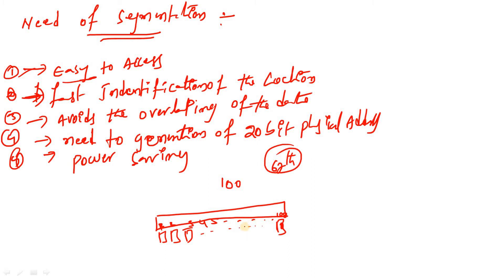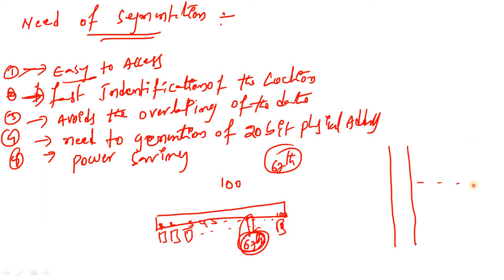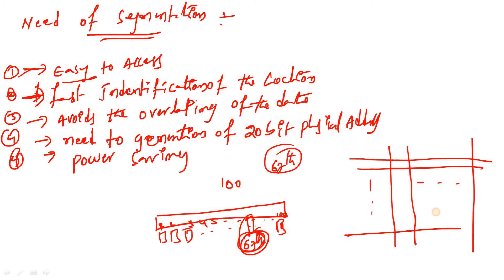Suppose if you want to access the 67th house, you need to count from the first house - first, second, third, fourth, fifth, and so on up to the 67th house. The cursor identifies the 67th location only after counting all houses from the first. So it takes more time. Instead, let us take another example in matrix format - arranging houses in rows and columns.